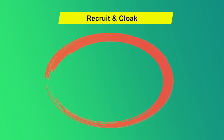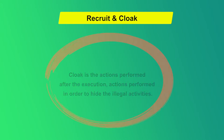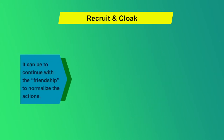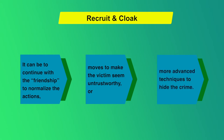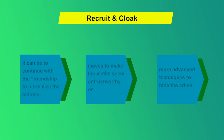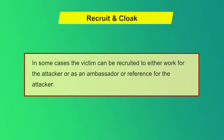The fifth step is Recruit and Cloak. Cloak refers to the actions performed after execution in order to hide illegal activities. This can include continuing a friendship to normalize the actions, making the victim appear untrustworthy, or using more advanced techniques to hide the crime. In some cases, the victim may be recruited to work for the attacker, or to serve as an ambassador or reference for the attacker.